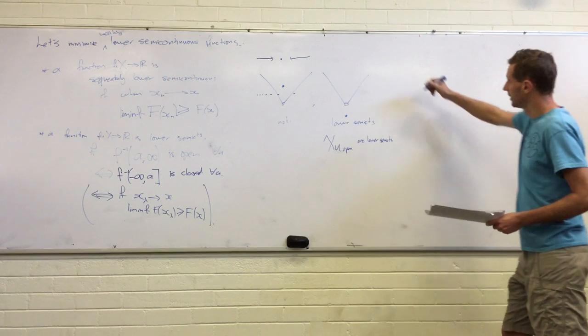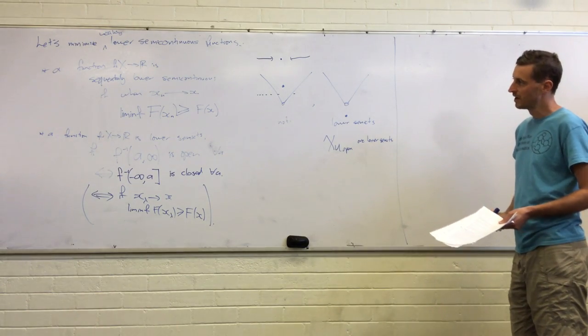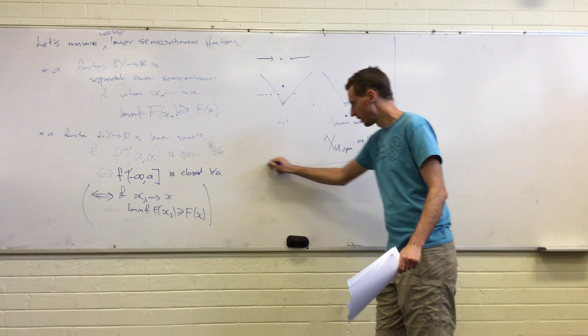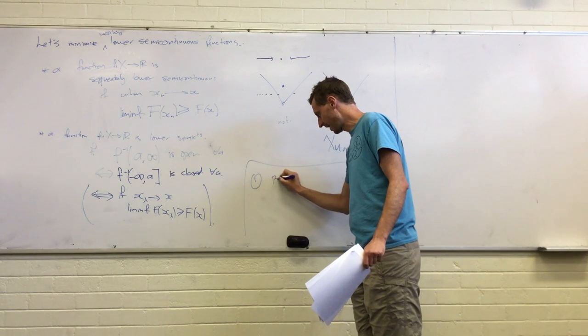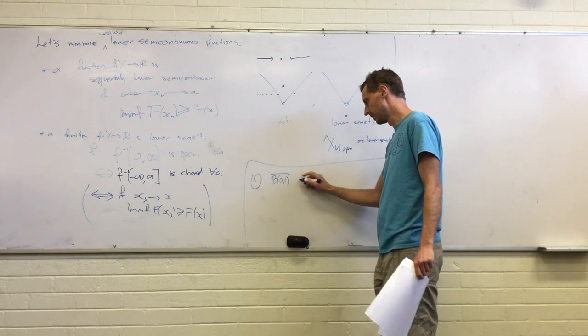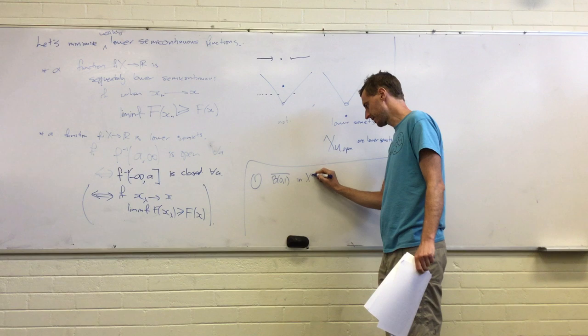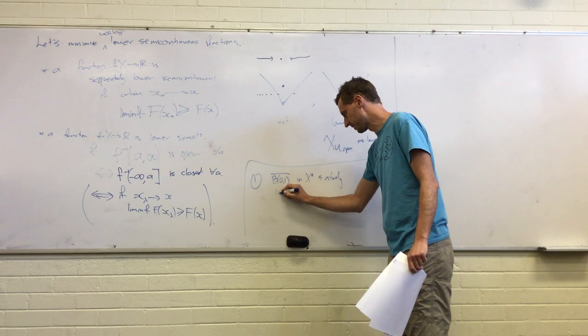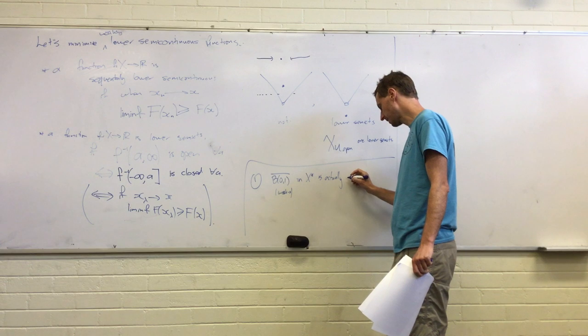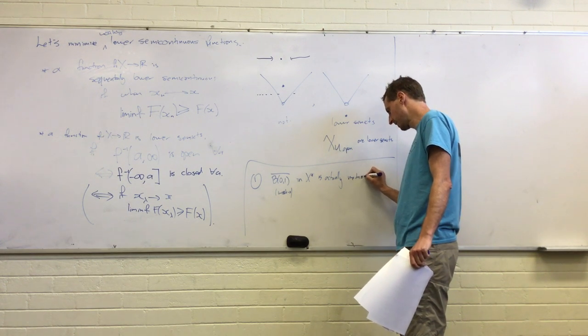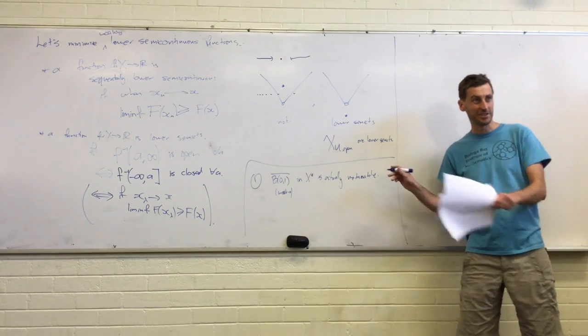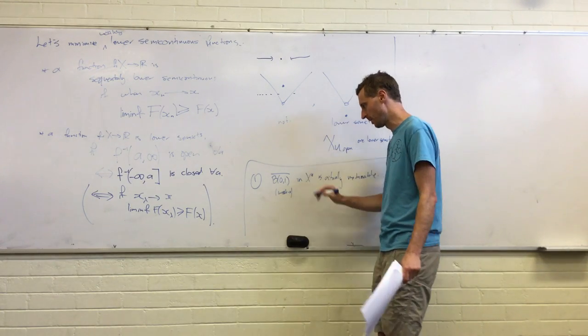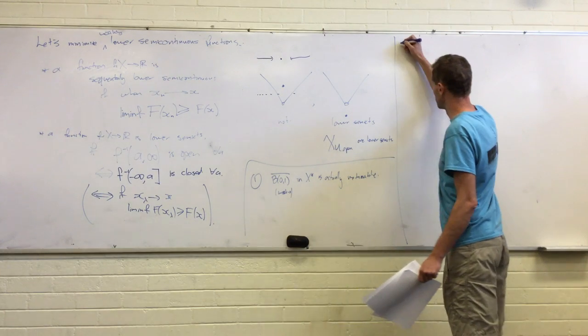So that's all very well. There is this distinction we need to worry about. But it turns out to not matter. And it turns out to not matter for two separate reasons. One is a theorem that we're not going to prove, which is that the closed unit ball in X* is actually metrizable with the weak-star topology. So even though the weak topologies and the weak-star topologies aren't in general metrizable and the difference between sequences and nets matters, it turns out it just doesn't matter here.